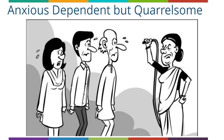At the same time, these people are quarrelsome with family members - there are arguments with the family members. So the Kali is a peculiar combination of anxiety, dependence, and quarrelsomeness with the family. Sometimes the physician is also considered a part of this family, so the patient is dependent, anxious, and quarrelsome with the physician as well.